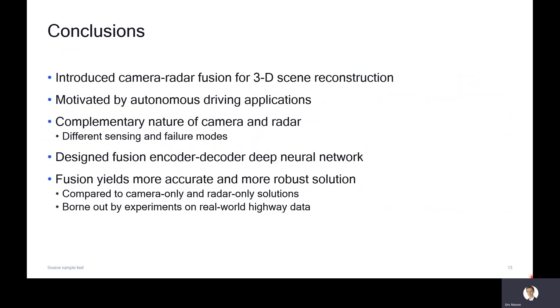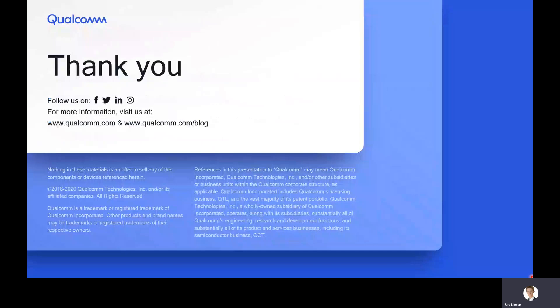With this, I come to the conclusion. We've introduced the camera radar fusion problem for 3D scene reconstruction, motivated by autonomous driving applications. I've talked about the complementary nature of the camera and radar sensor—they have different sensing and failure modes. We designed a fusion encoder-decoder deep neural network to solve this problem. I've argued that the fusion yields more accurate and more robust solution compared to camera only and radar only solutions. In the paper, we have much more detailed numerical evaluations as well. This is borne out by experiments on real-world highway data. Thank you very much.